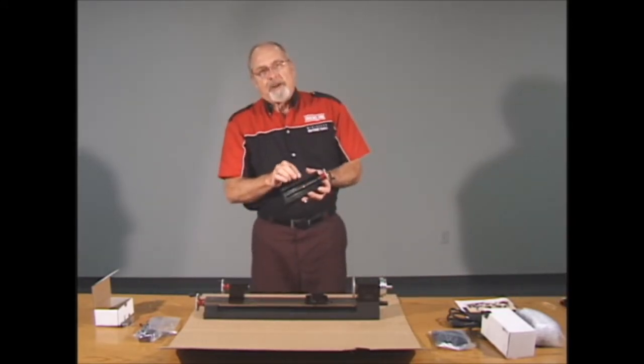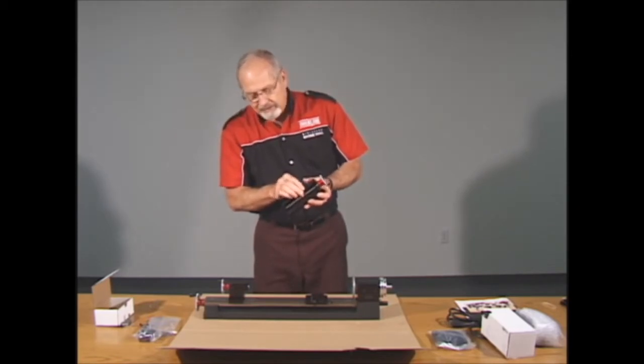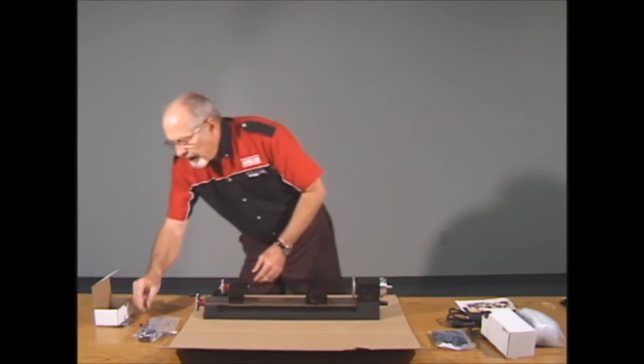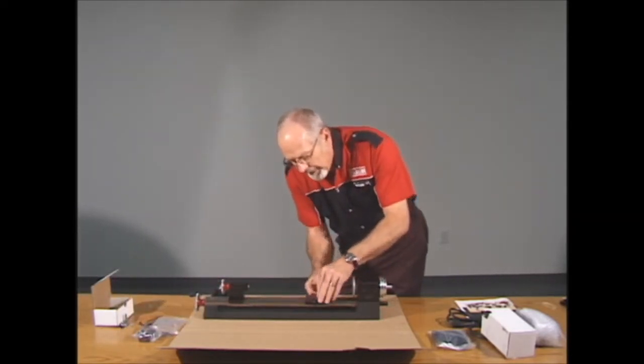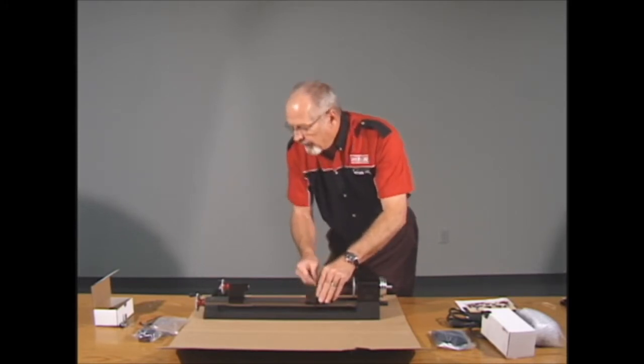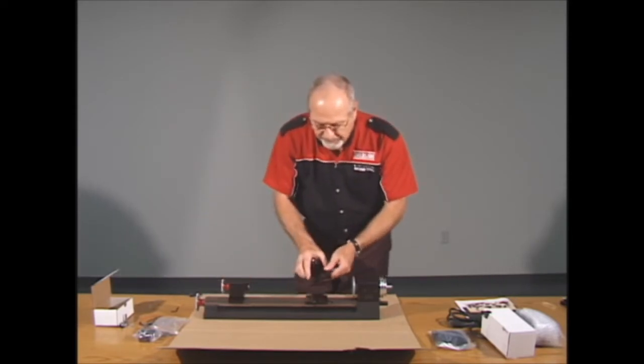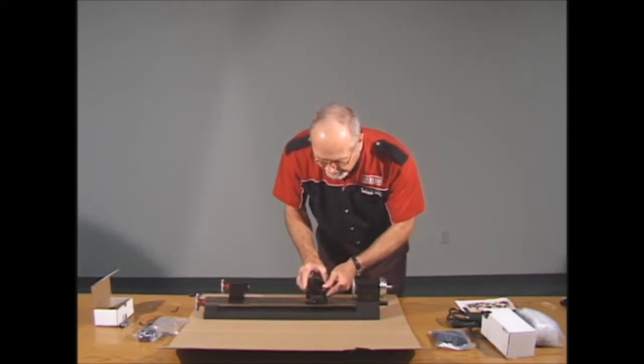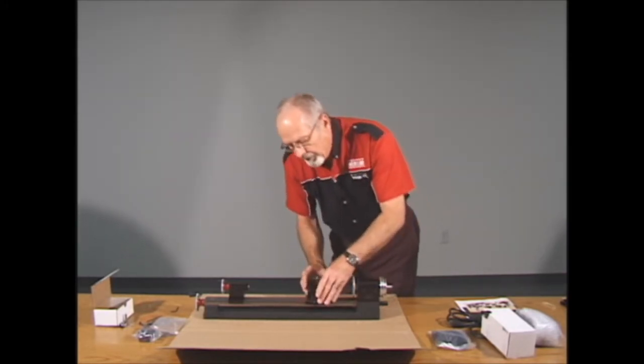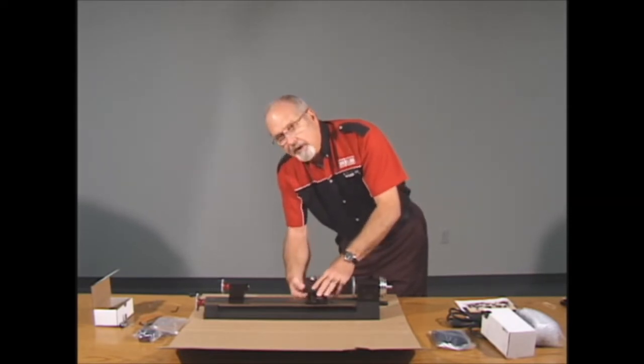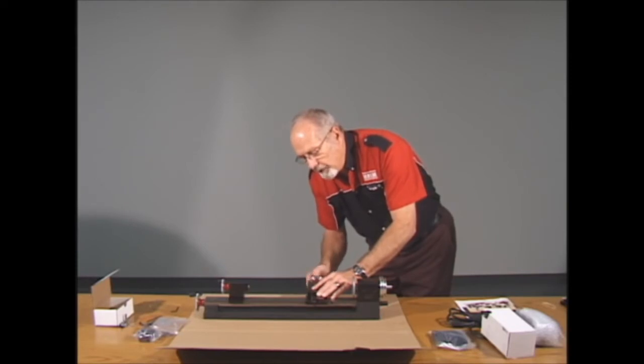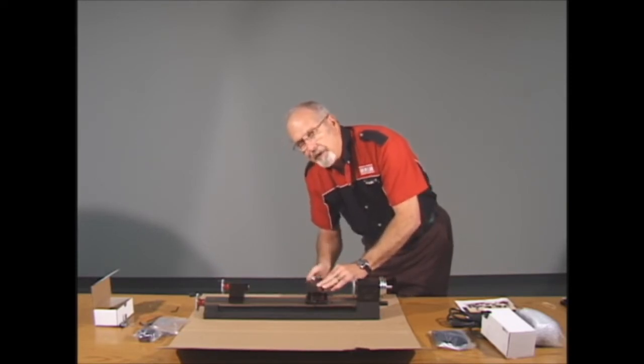The backlash nut comes already installed on the lead screw, and the button head screw is already attached to the back of the saddle. So all we have to do is take our smallest hex key and break it loose. You don't have to take it off, just loosen it up so we can adjust it later. Now you'll align the dovetails of the table over the saddle and push it on until the lead screw engages in the hole where the slide screw insert is.